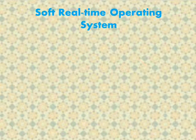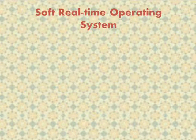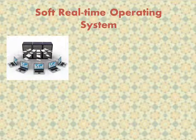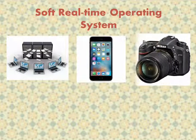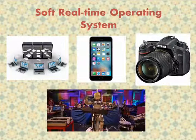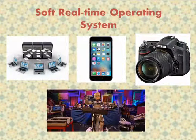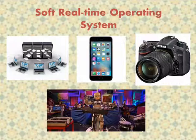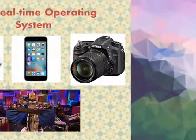Soft real-time operating system: In this type of OS, missing a deadline is acceptable. There is a cost associated with overrunning, but this cost may be abstract. Examples include online databases, mobile phones, digital cameras, and orchestra-playing robots.